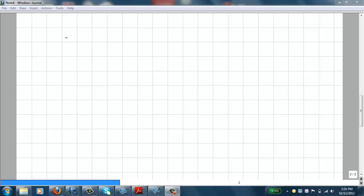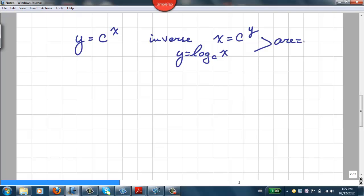So for exponential functions like y is equal to c to the power of x, the inverse is x is equal to c to the y. Remember that with the inverse we just switch x and y. y is equal to log base c of x. This y equals log base c of x and x is equal to c to the power of y are the same thing. These are equal.